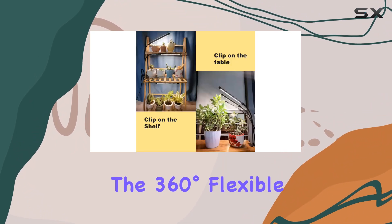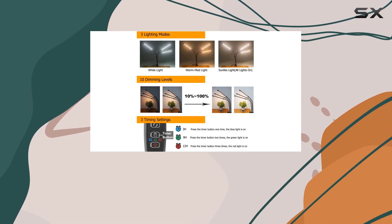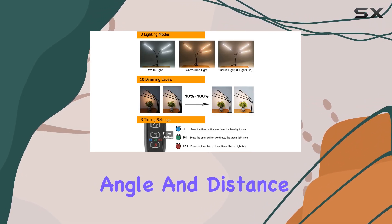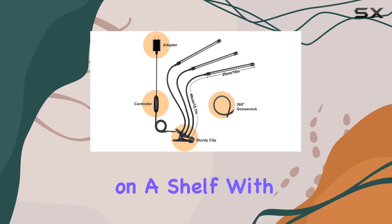The 360 degrees flexible gooseneck design and sturdy anti-slip clip make it easy to position the light at the optimal angle and distance, whether you're nurturing herbs on a kitchen counter or enhancing flower growth on a shelf.